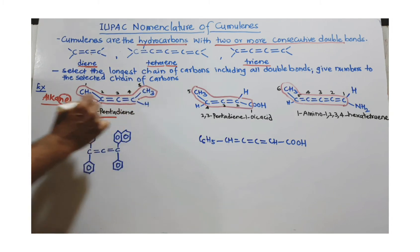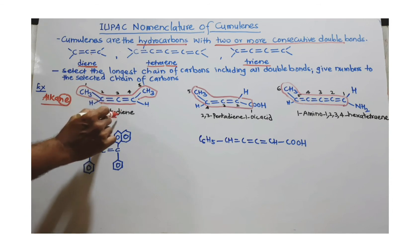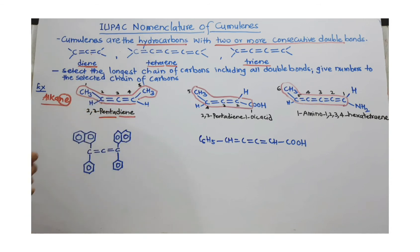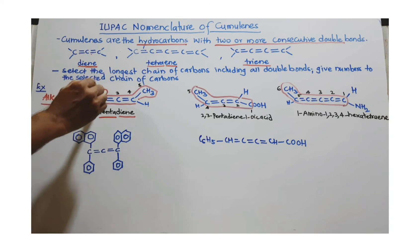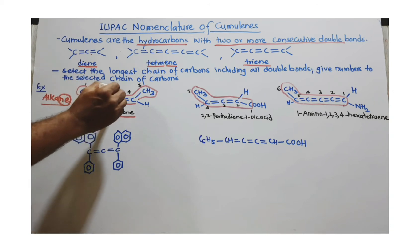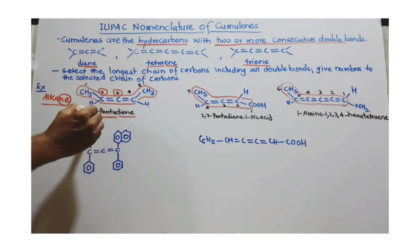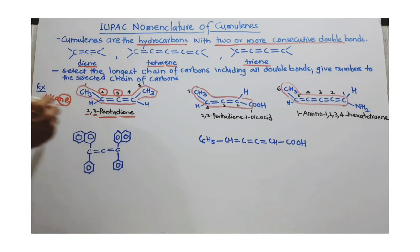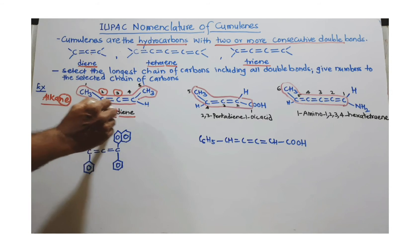The parent is pentane, and as usual I remove '-ane'. Since there are 2 double bonds, I write 'diene'. I prefix the numbers where the double bonds start. The first double bond starts at carbon number 2, and the second double bond starts at carbon number 3. Both numbers are separated by a comma. So this becomes 2,3-pentadiene.